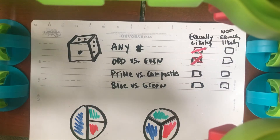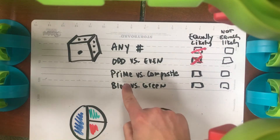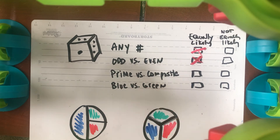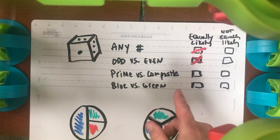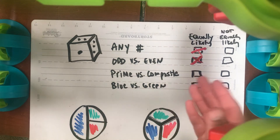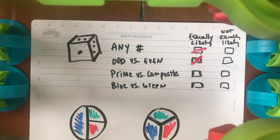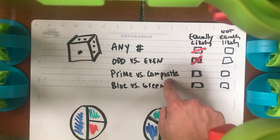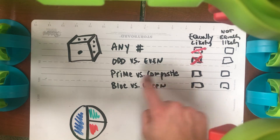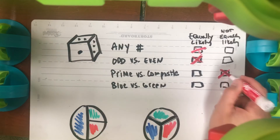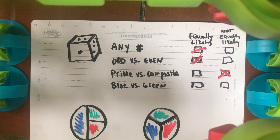How about a prime versus a composite? Prime numbers on a die are two, three, and five. Composite numbers on a die are only four and six. One is neither prime nor composite. So there's three out of six for prime, two out of six for composite. Those are not equally likely events.